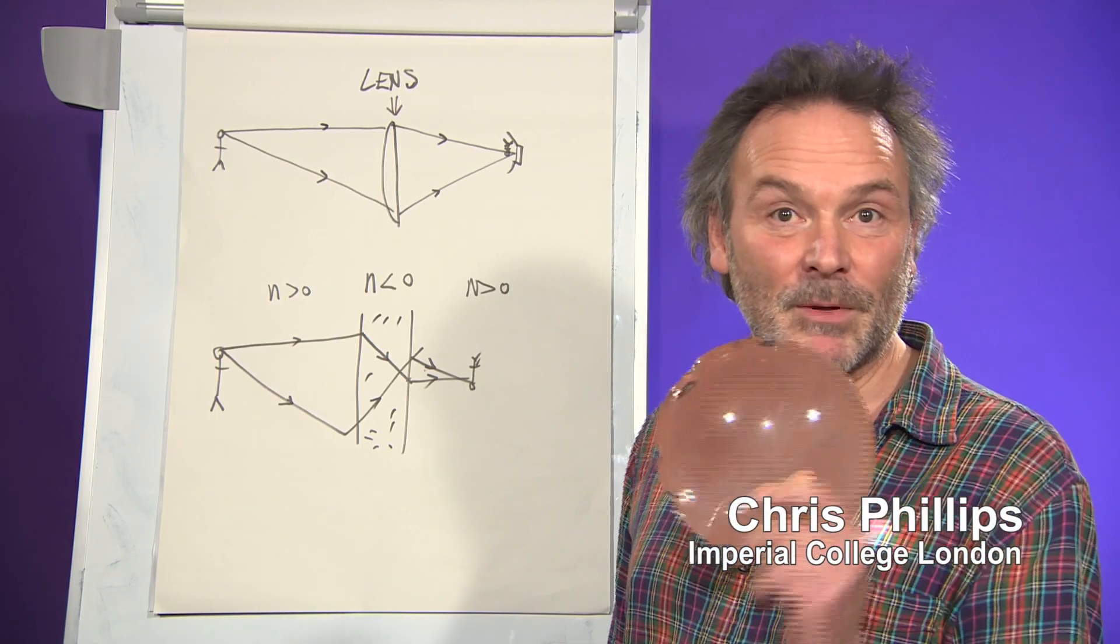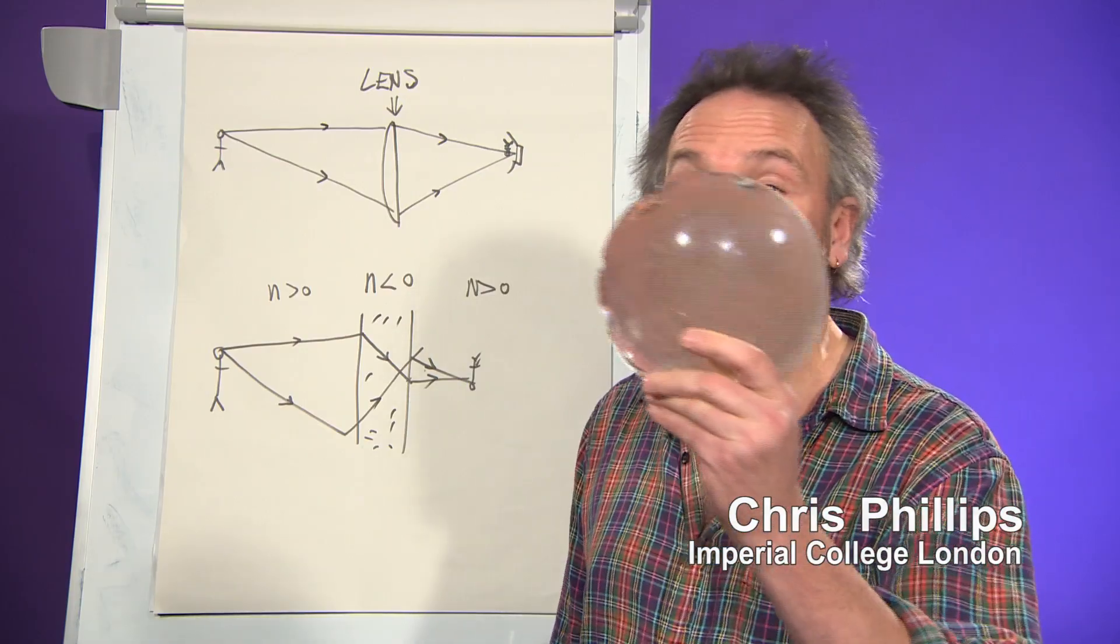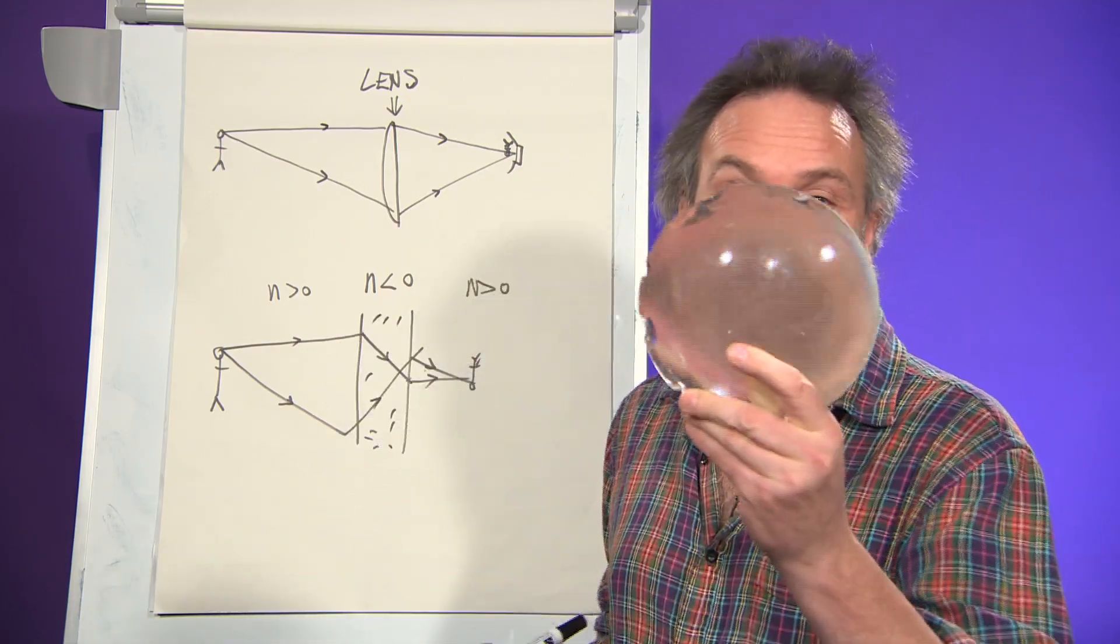Hello, I'm here today to talk about how to make a perfect lens. This is an ordinary lens. It's made of glass, of course, and it makes an image.